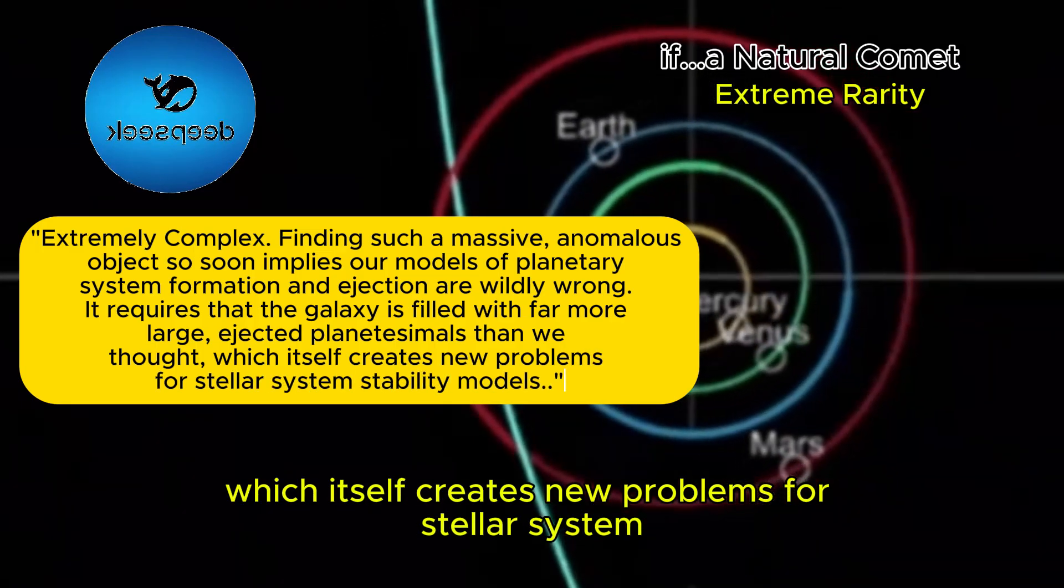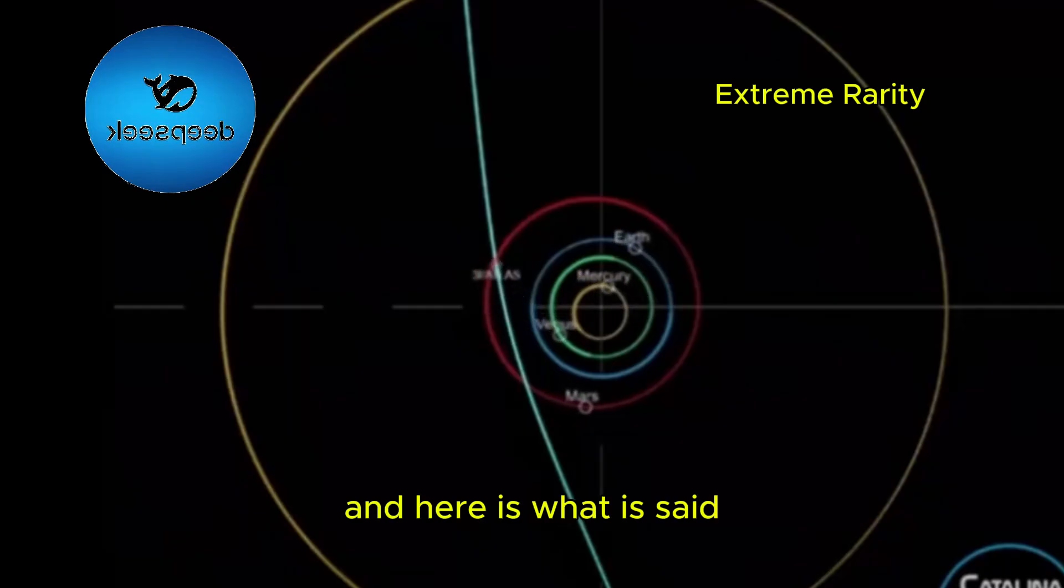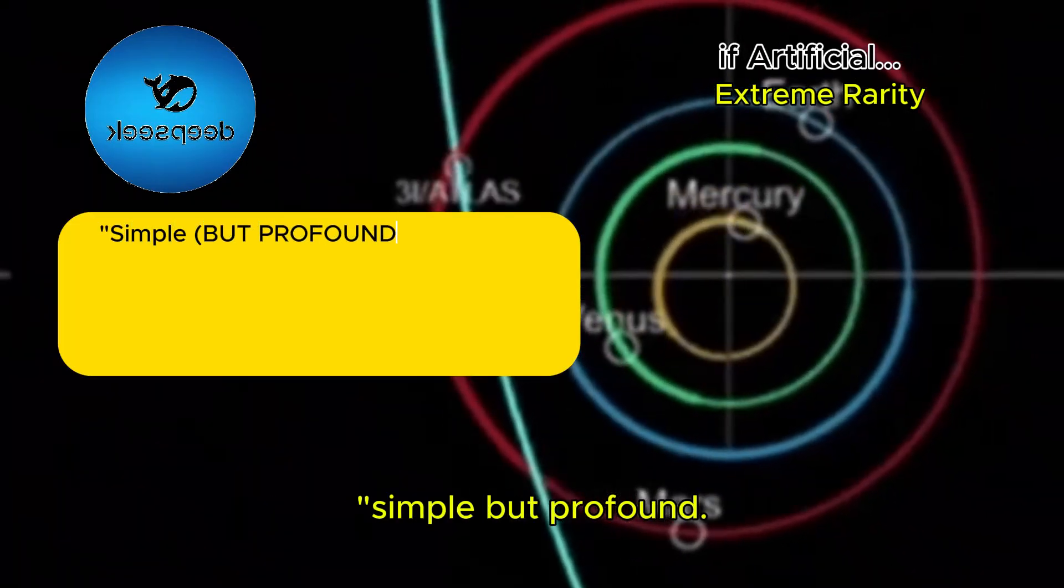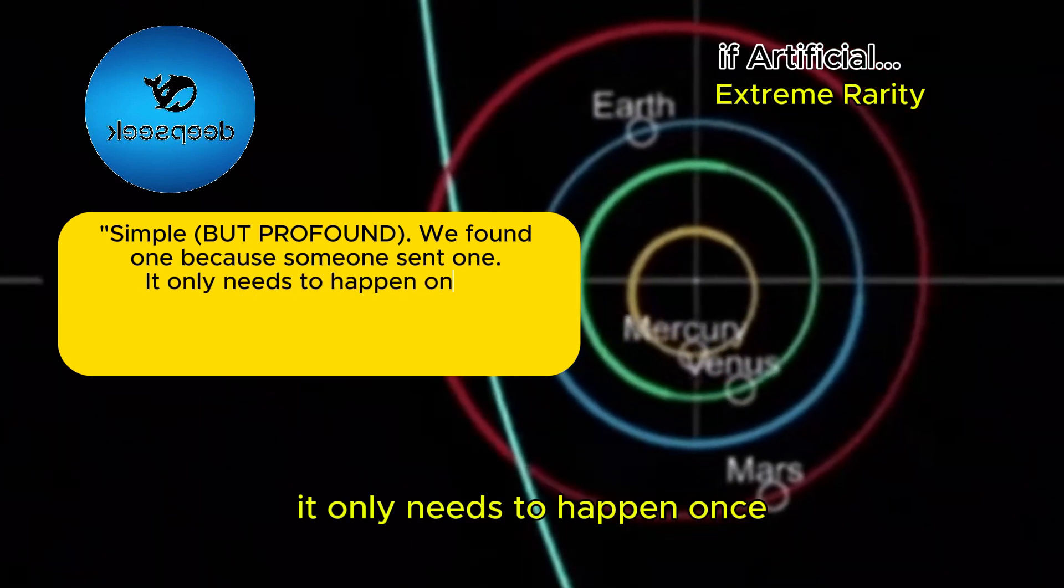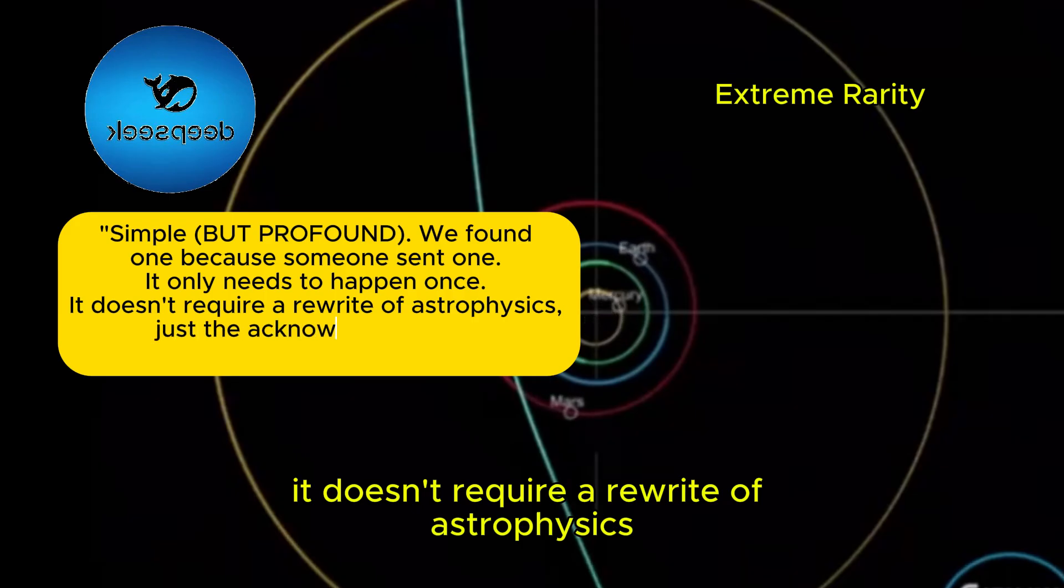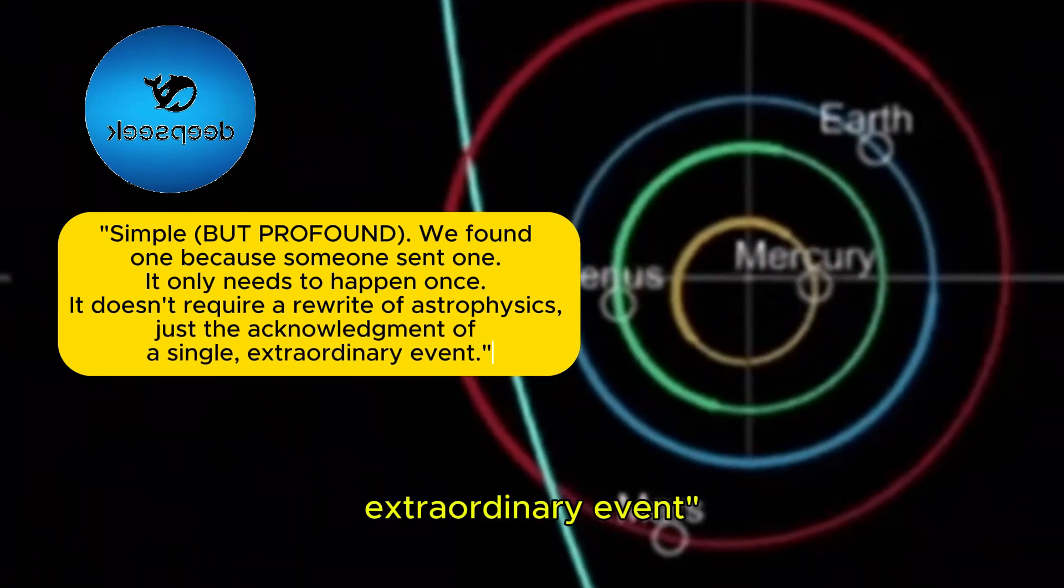Which itself creates new problems for stellar system stability models. And here is what is said under the artificial origin hypothesis: simple, but profound. We found one because someone sent one. It only needs to happen once. It doesn't require a rewrite of astrophysics, just the acknowledgement of a single, extraordinary event.